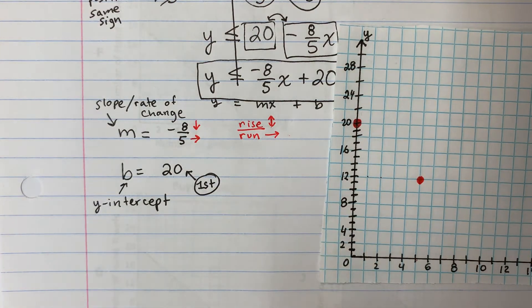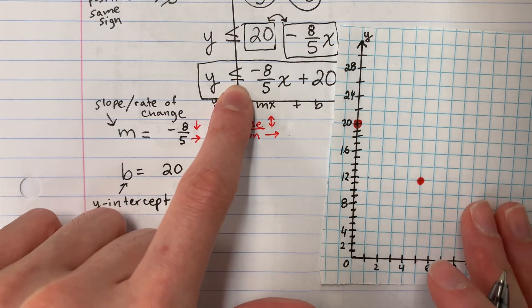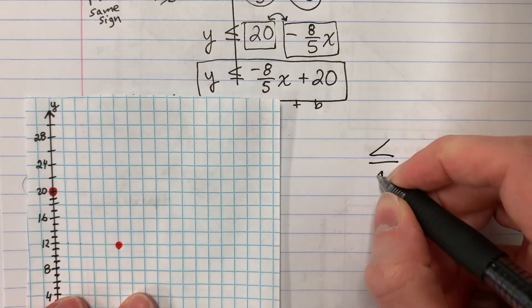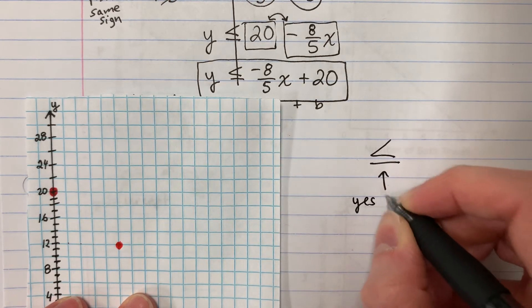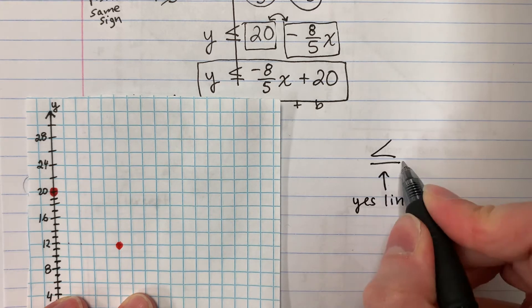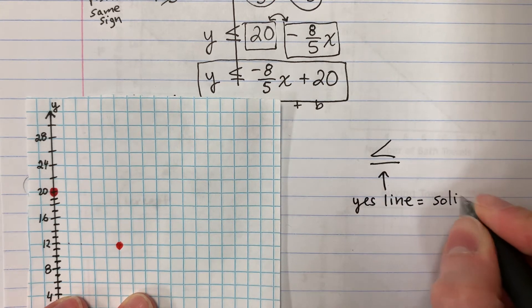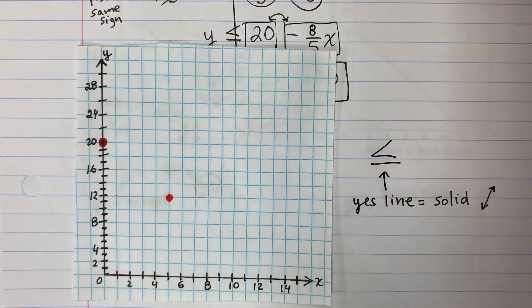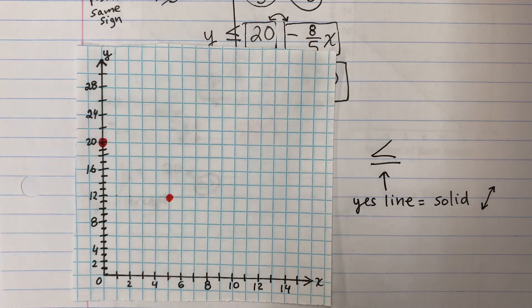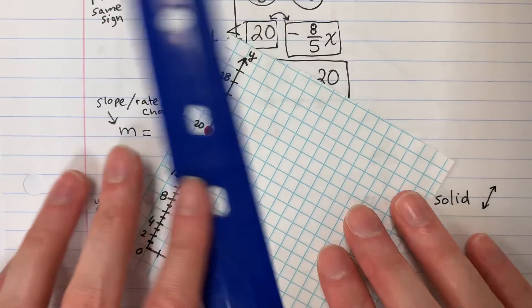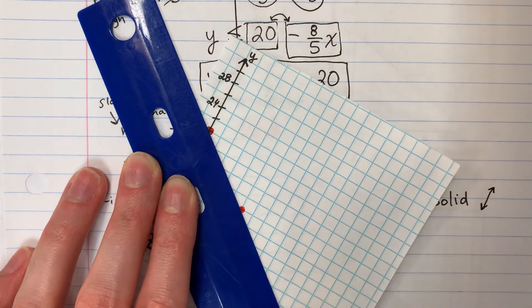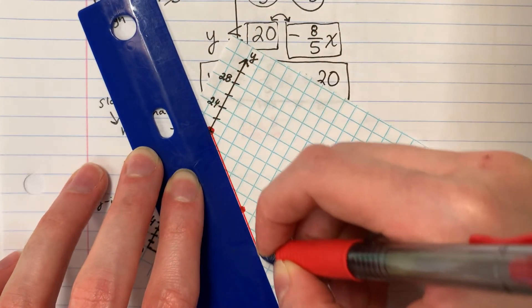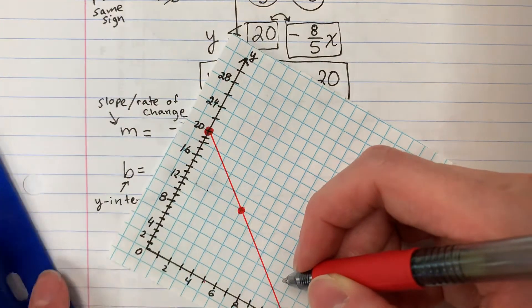Now we need to decide what type of line. Look at the sign here. It's less than or equal. So yes line. This is going to be solid. So we're going to go ahead and make a solid line. No dashed. It's going to be solid.